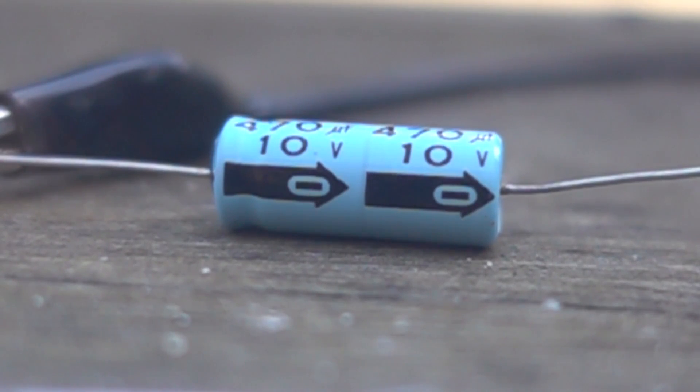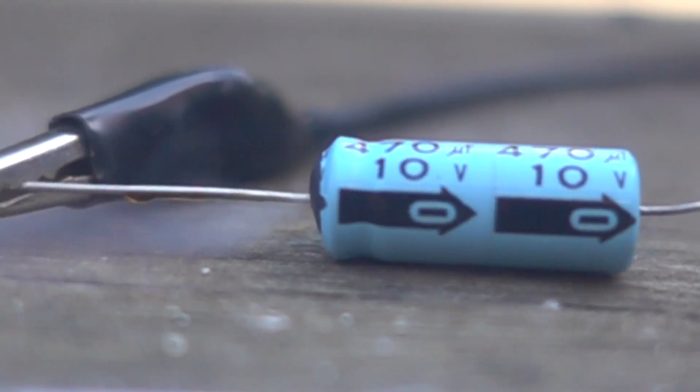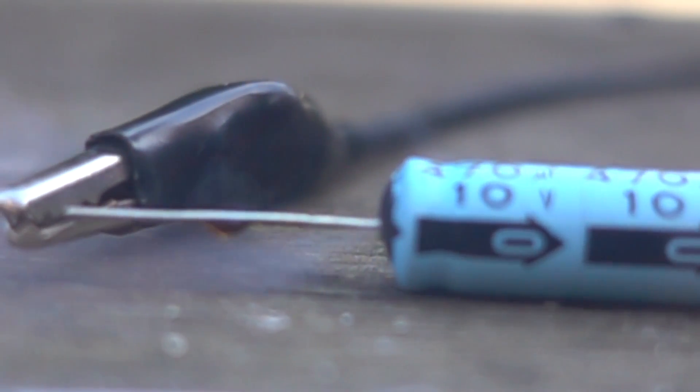And of course we have to blow up the obligatory capacitor. Here's a 470 mic, 10-volt backwards on my 15-volt, 40-amp supply. And there it goes. Woo-hoo! There you go. You can't beat the laws of physics.